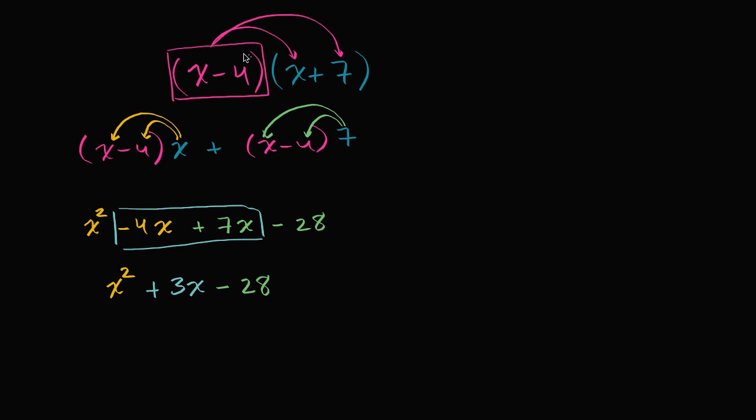First, we distributed the entire x minus four onto the x plus seven, so you got x minus four times x, plus x minus four times the seven. And then we distributed the x onto the x minus four to get what we see in yellow here. And we distributed the seven onto the x minus four to get what we got in green here. And then we just simplify it a bit.